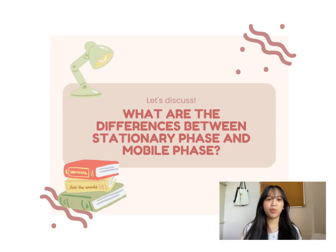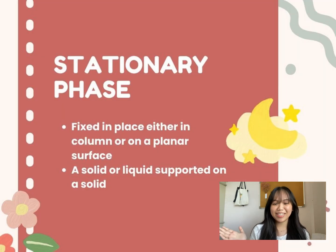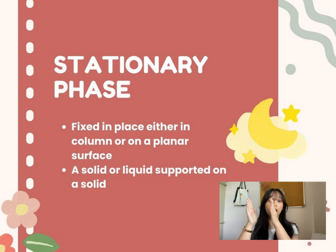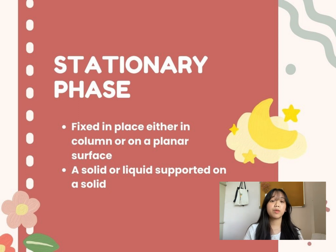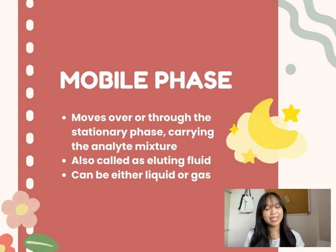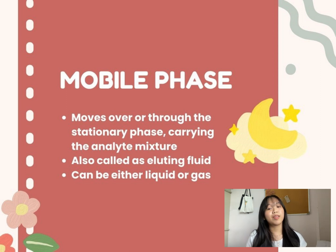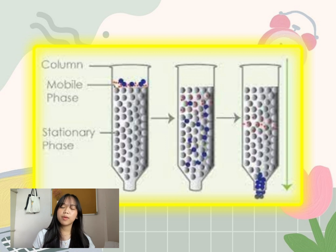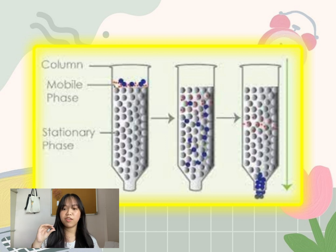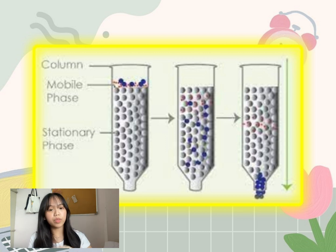What are the differences between stationary phase and mobile phase? In the stationary phase, it is a phase that is fixed in place either in a column or a planar surface. The stationary phase can also be a solid or a liquid that is supported on top of a solid. For the mobile phase, it is a phase that moves or flows through the stationary phase while carrying its analyte mixture. It is also called the eluting fluid. The mobile phase can either be a liquid or a gas. In this diagram, you can see the process of both phases in a column — the stationary phase stays in a fixed position while the mobile phase flows through it.